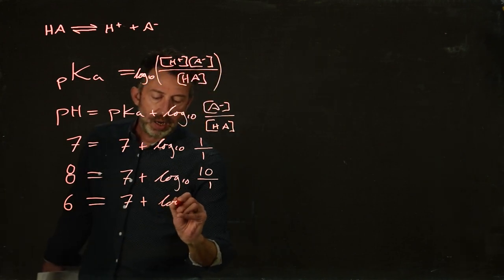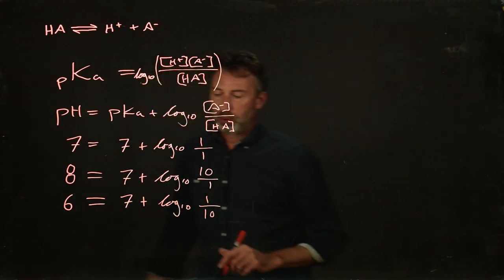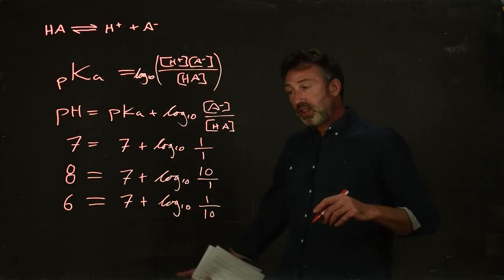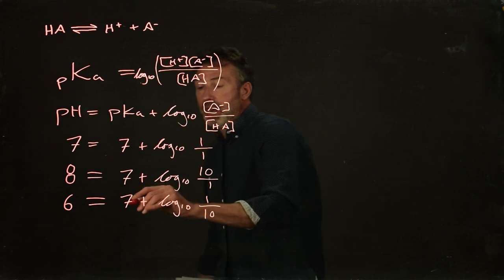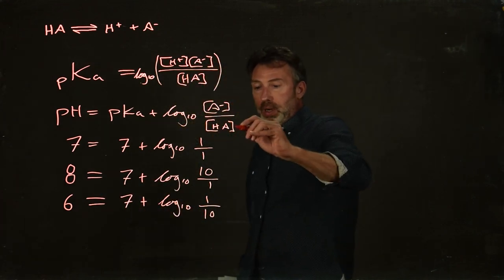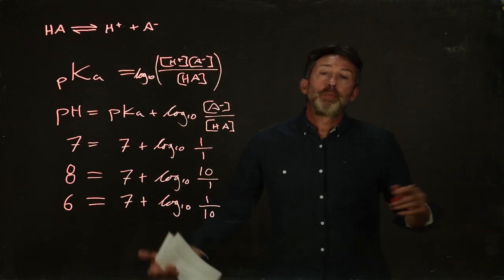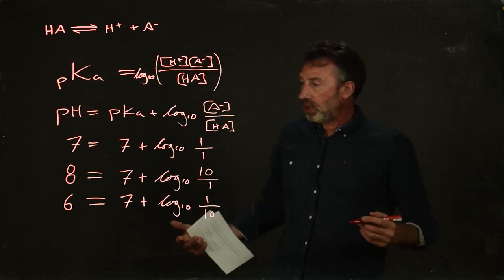So the log 10 of 1/10, or 0.1, is equal to minus 1. So in this situation, where the pH is lower than the pKa, we've got much more of this form than we do of this form here. So it's going to be buffering in one direction, but not in the other direction.